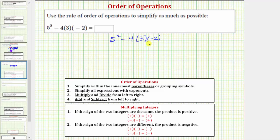The first step in the order of operations is to simplify within the parentheses or grouping symbols, but for this expression there's nothing to simplify inside the parentheses, so we move to step 2 where we simplify all expressions with exponents. Here we have an exponent of 2.